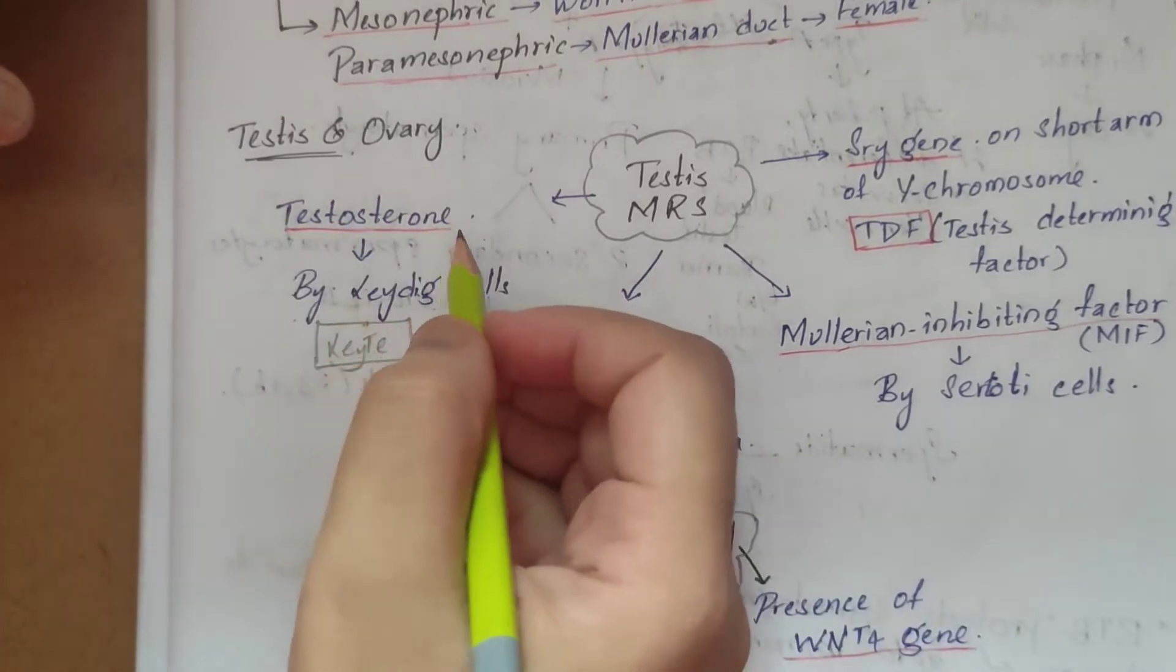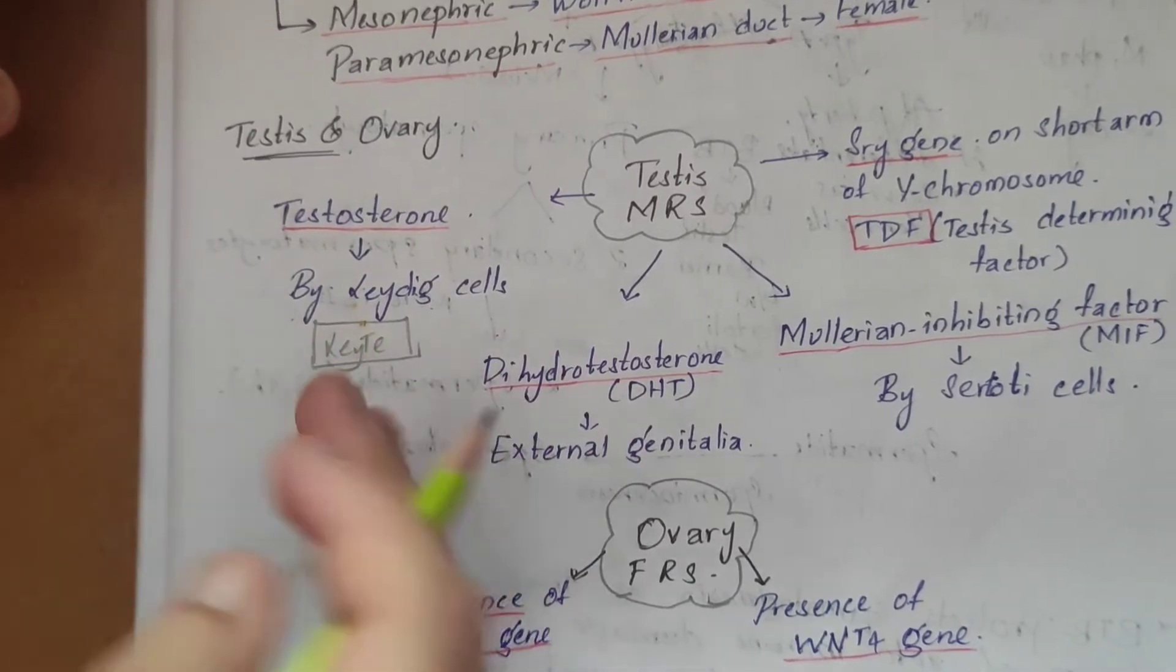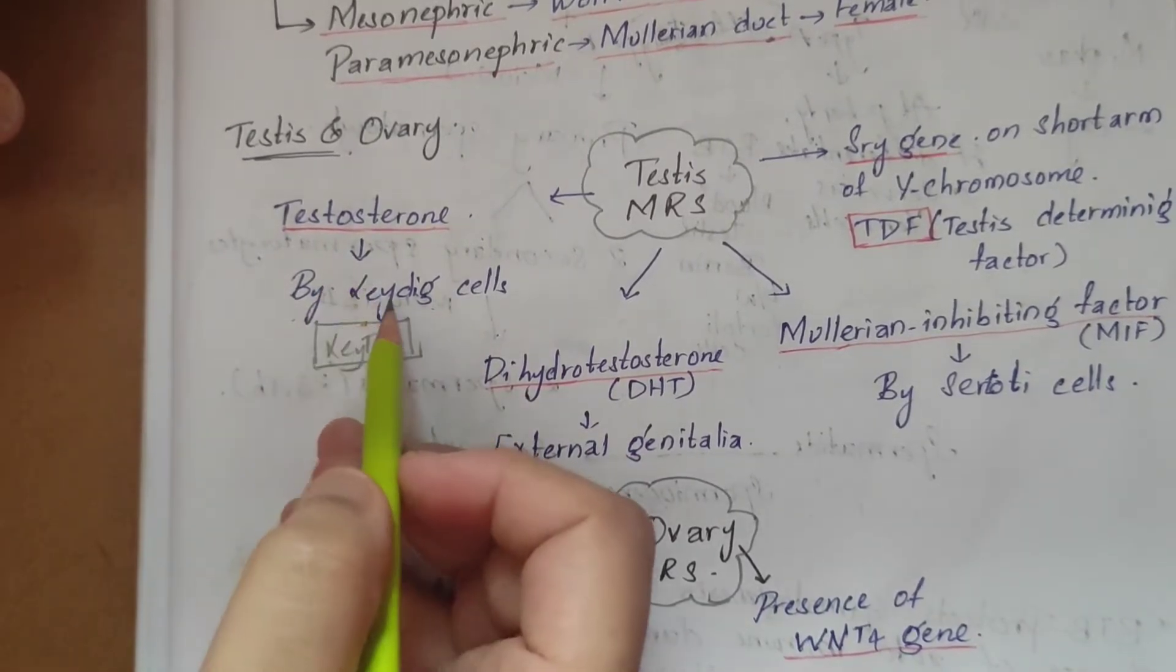It also has DHT (dihydrotestosterone) and testosterone, which are produced by Leydig cells. Most people like me confuse whether testosterone is produced by Leydig cells or Sertoli cells.